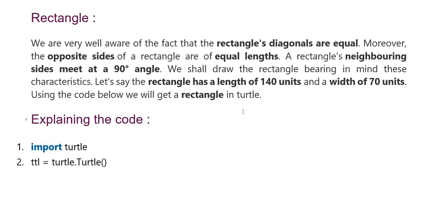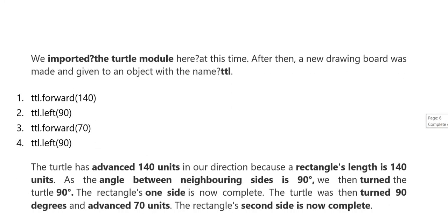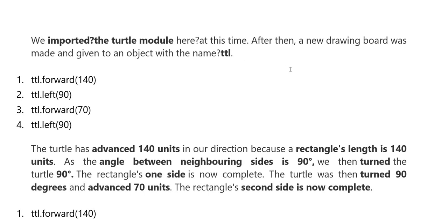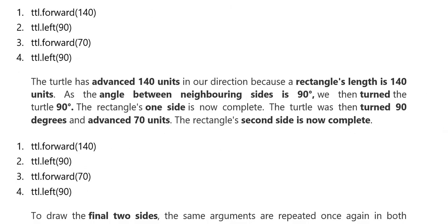Here, code below for a rectangle in turtle. Explain: import turtle, turtle side. After then, a new drawing is made and created given to an object with the name. Forward and left, forward and left represent. Here, the turtle advanced in the direction. Because the rectangle length is 140 units and the angle between neighboring sides is 90, then we turn the turtle 90 degrees.